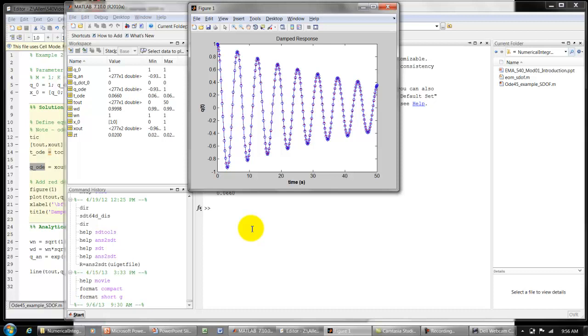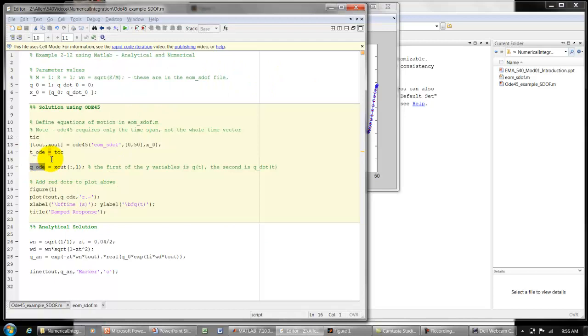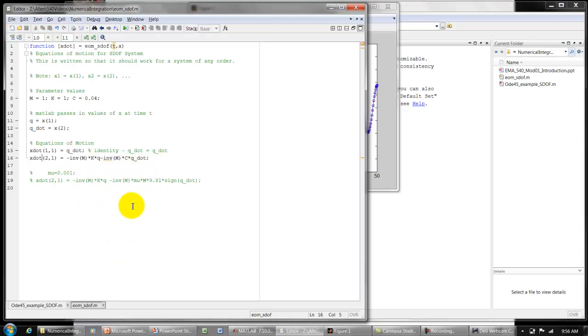So next let's look at solving a more complicated system. I'll put a derivation here towards the end, but let's look at solving a single degree of freedom system with nonlinear damping. Oh, first I forgot to show you the function, the equation of motion function. You can look at this later. Basically, this is a function of t and x that gives back x dot. So if you look at the slides, the first element in x dot is just the velocity. And the second element is k over m times the displacement minus c over m times the velocity. And if we had a forcing function, we could just add that in right here.